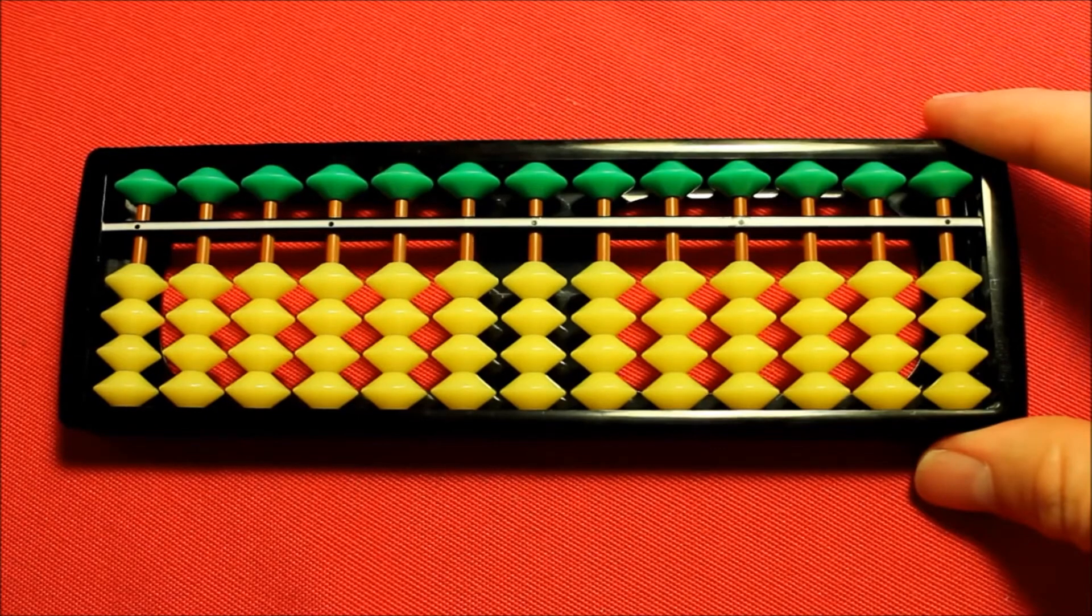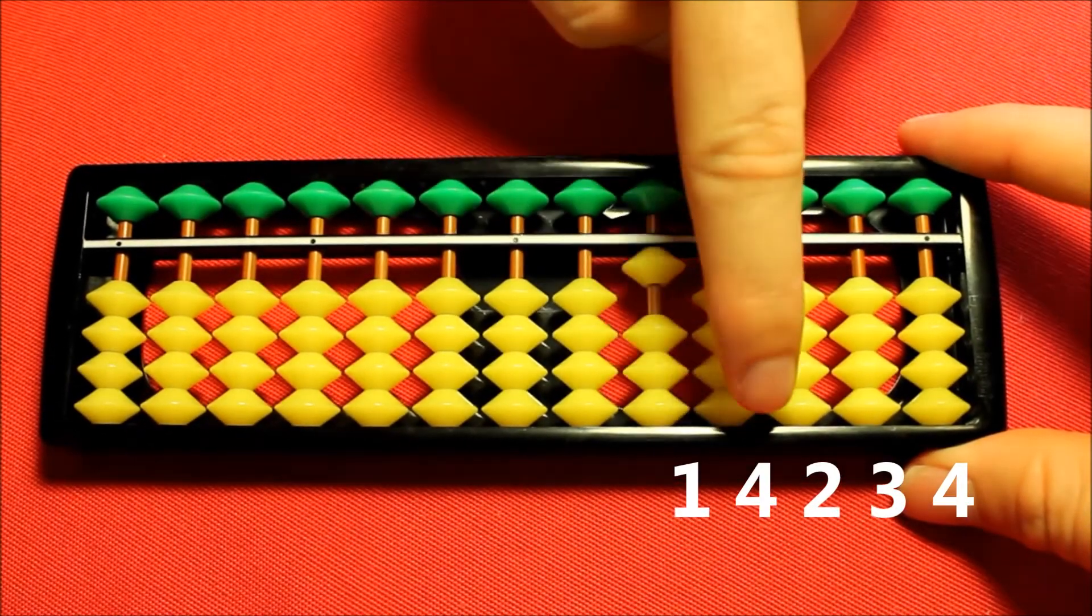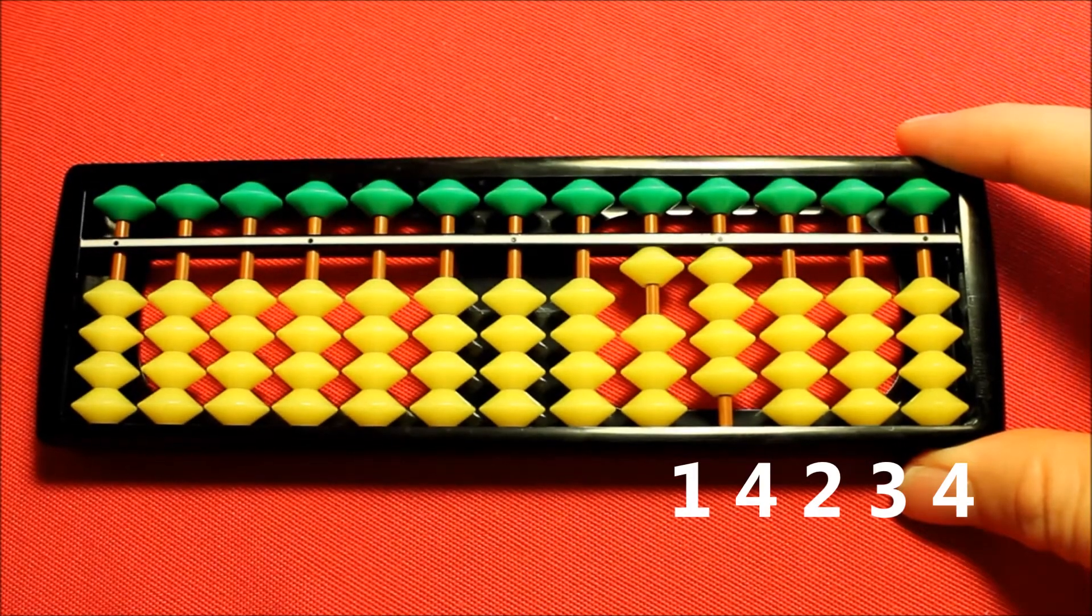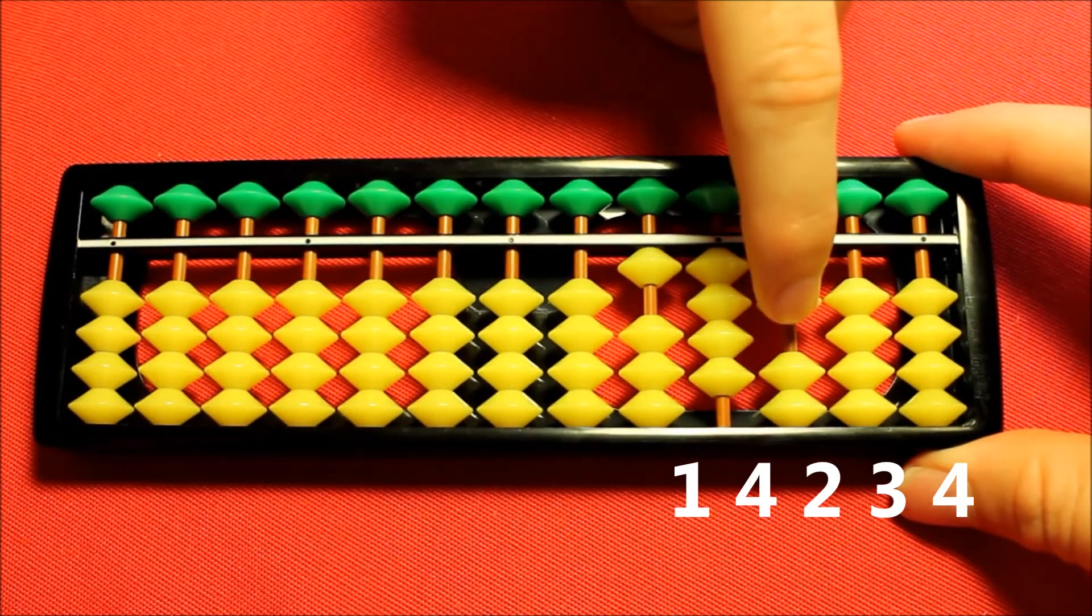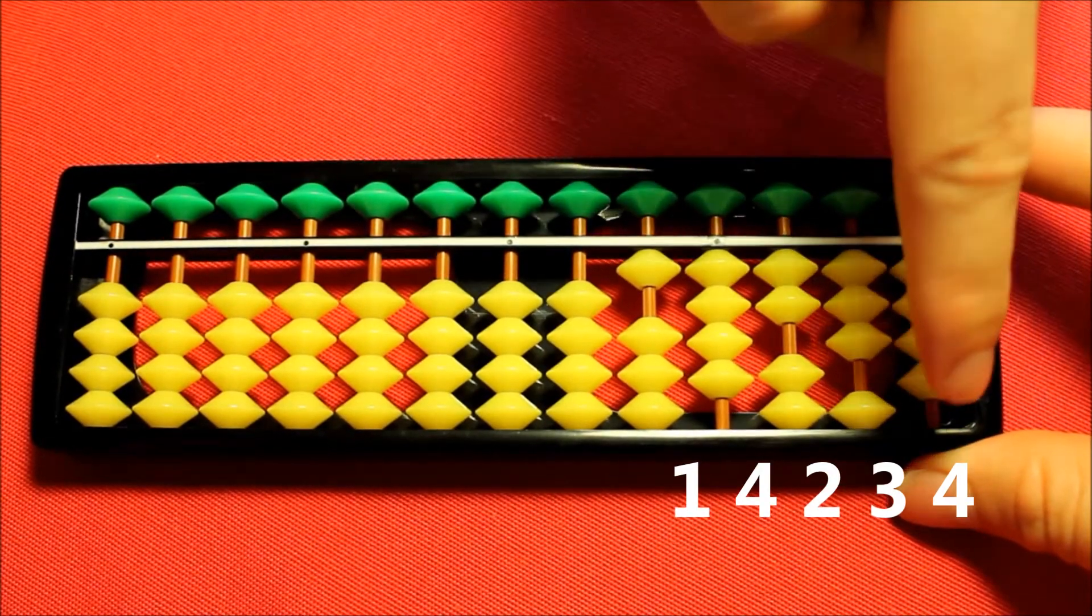Firstly let's load up the initial number. So one in that column, four in this one, two here, three here and four here.